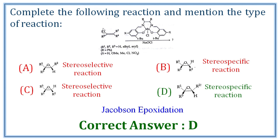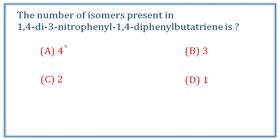Simply put, all substituents involved are hydrogens in the base case. For example, with simple ethylene, if you have a stereoisomeric substrate — such as 1,4-bis(3-nitrophenyl)-1,4-diphenylbutadiene — the reaction is stereospecific.